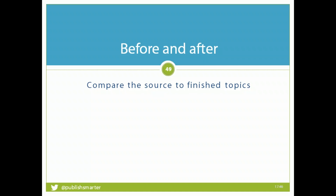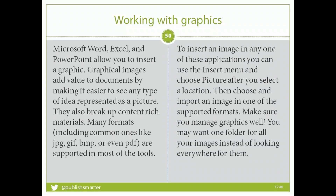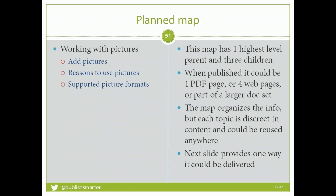Let's take a quick look at the before and after. I started with a bunch of unstructured text in two columns. The map I planned has one highest-level parent — Working with Pictures — and three children: Add Pictures, Reasons to Use Pictures, and Supported Picture Formats. When published, I could have one PDF page, four web pages, or a chapter in a larger document set. From a DITA standpoint, I create a map, organize my topics, then start creating. Each topic is a discrete piece of content that could be reused anywhere — for example, Supported Picture Formats could go into a file formats publication or an image manipulation guide.